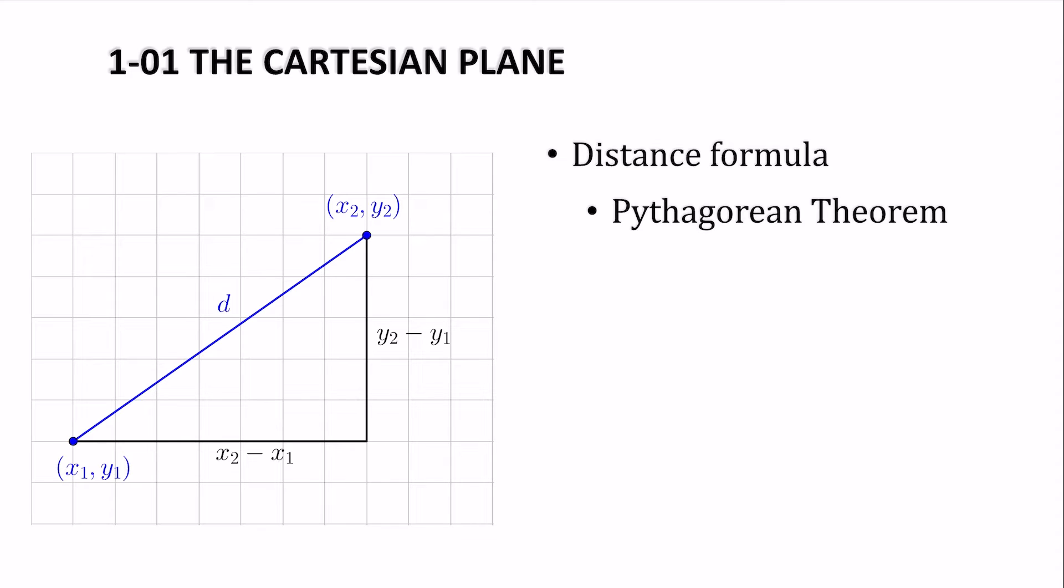we have our two points, x1, y1, and x2, y2. And we can draw a right triangle. The horizontal leg is the difference of the x's. Vertical leg is the difference of the y's. So if we use the Pythagorean theorem, a squared plus b squared equals c squared.